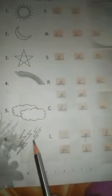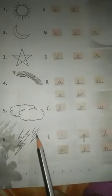So you write C-L-O-U-D Cloud. Number six, what is this? This is Lightning, so we write L-I-G-H-T-N-I-N-G Lightning.